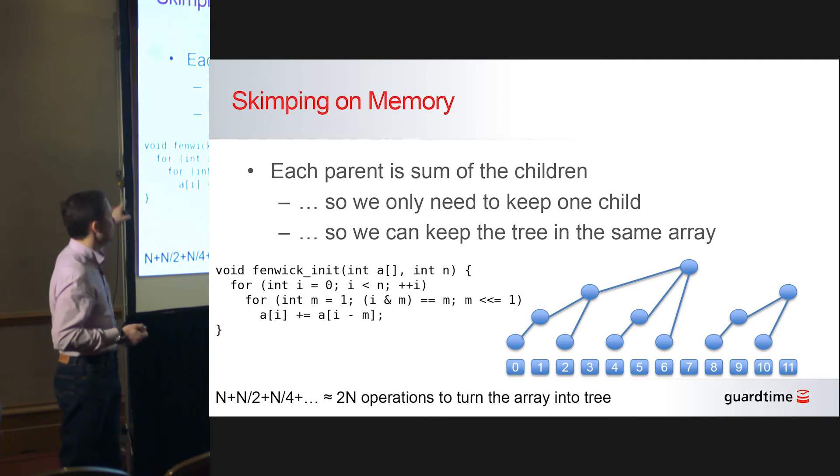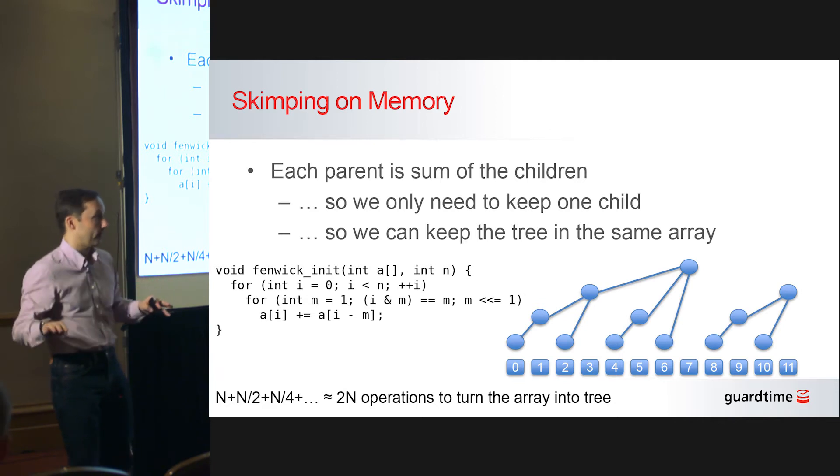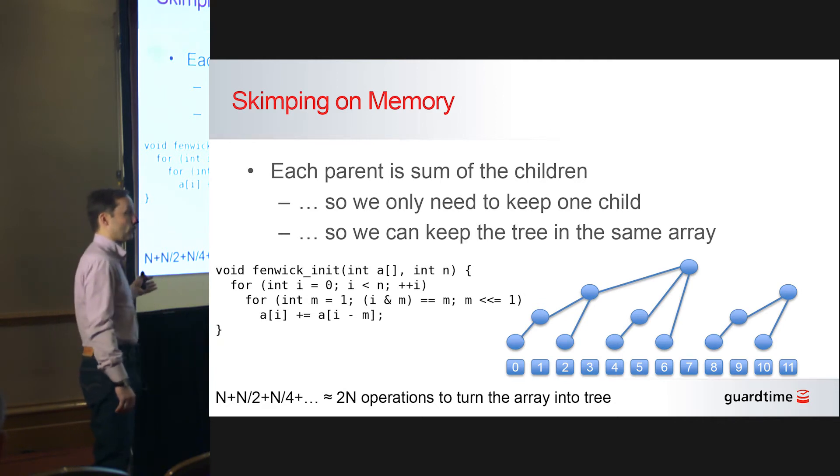And you don't even have to do this if your array starts out filled with all zeros, because Fenwick tree representation of a 0, 0, 0 array is still a 0, 0, 0 array. So it becomes a no-op if you start with zeros and then start adding values to your array one by one.